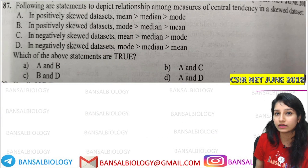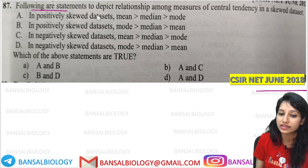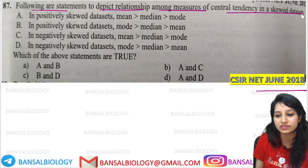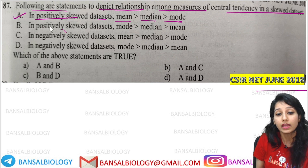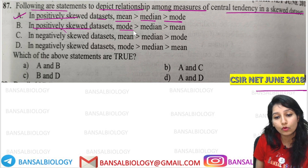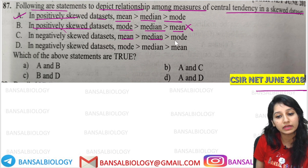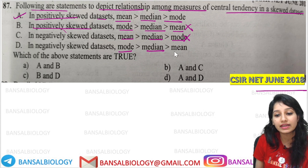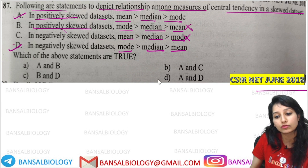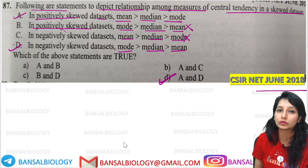The next recent question is June 2018: following a statement to depict relationship among measures of central tendency in skewed data sets. In a positively skewed data set, mean is more than median, which is more than mode — absolutely correct. In a positively skewed data set, mode is more than median, more than mean — that is for negative skewness. In negatively skewed data, mode is more than median and more than mean. So A and D — here D is completely correct.